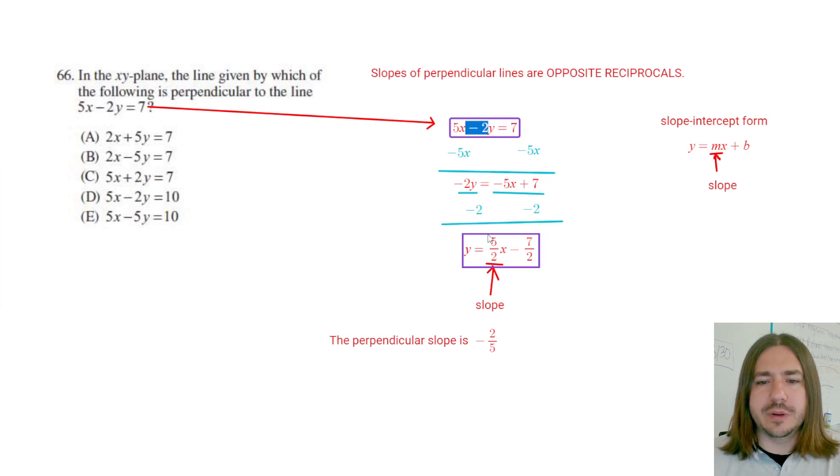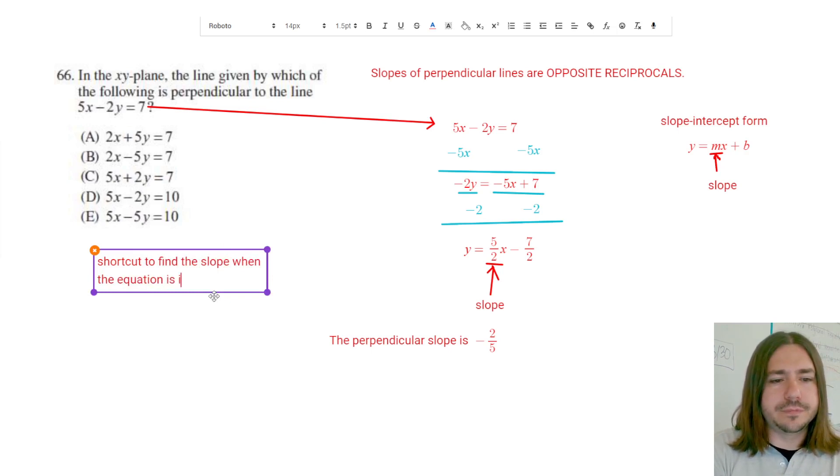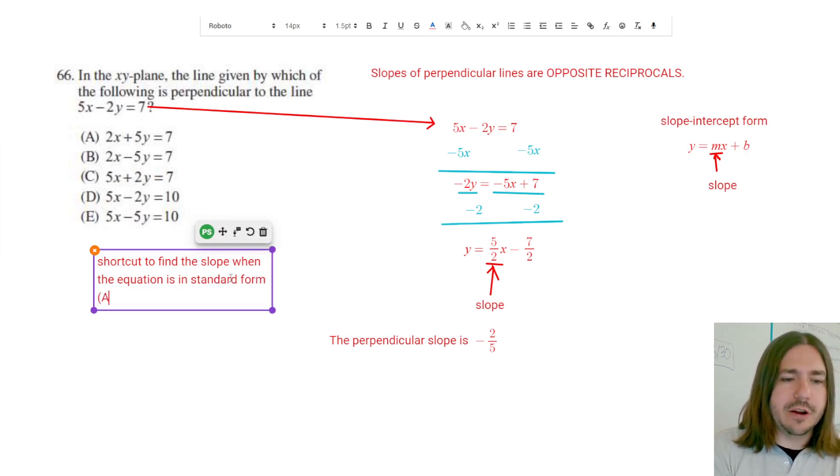So one way to find the slope a little bit quicker is to take your coefficient of x and divide it by the opposite of the coefficient of y. This is a little shortcut. Shortcut to find the slope when the equation is in standard form. Standard form meaning ax plus by equals c. And you can see that all these equations are in that form.